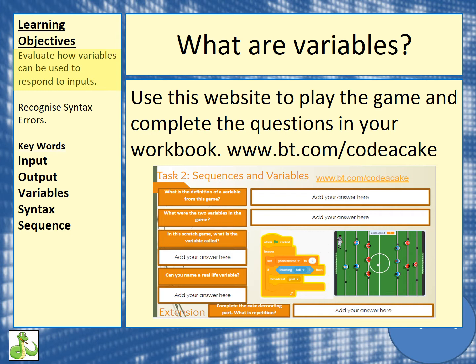Then you're going to see two variables appear in your code and in the game. Once you've figured that out, add these to this page. Once you've finished that section of the game, I want you to have a look at the Scratch code. Can you figure out what the variable was in it, and can you figure out an example of a real-life variable?